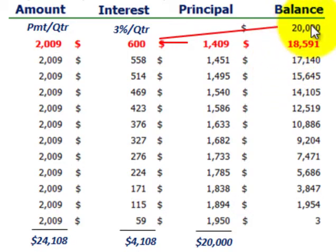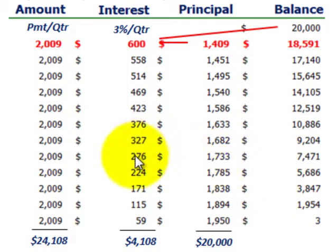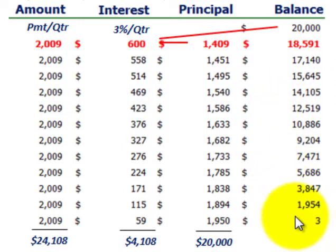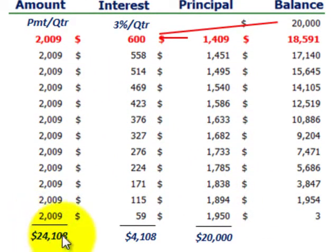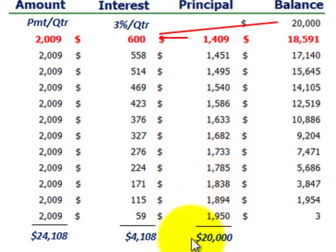Continuing through the regular schedule, we see a declining principal balance each period — simply the difference between the cash payment and the interest expense. By the last payment, we reach essentially a zero balance. The total paid was $24,108, with $4,108 in total interest expense and $20,000 in total principal reduction.